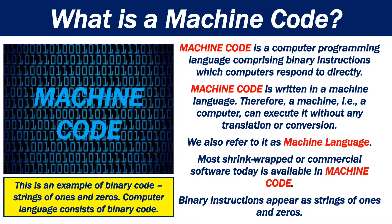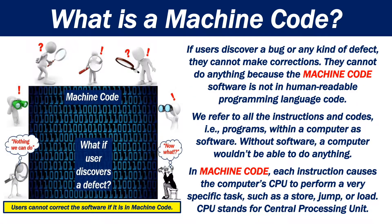Most shrink-wrapped or commercial software today is available in machine code. Binary instructions appear as strings of 1s and 0s. If users discover a bug or any kind of defect, they cannot make corrections. They cannot do anything because the machine code software is not in human-readable programming language code.